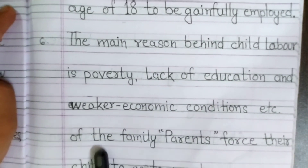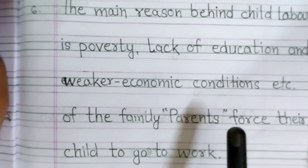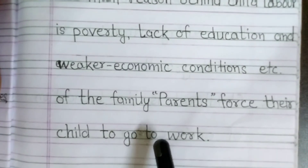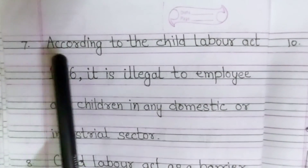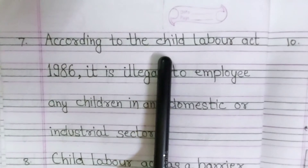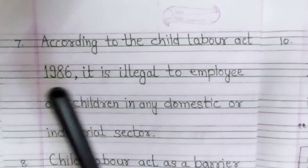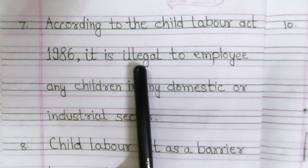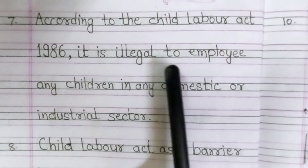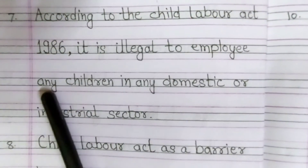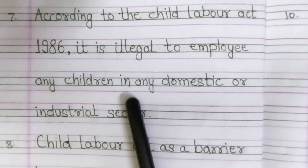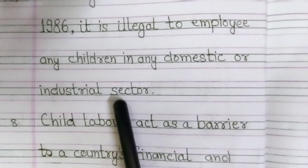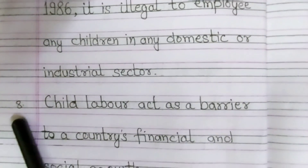Due to the family's conditions, parents force their child to go to work. Number 7. According to the Child Labor Act of 1986, it is illegal to employ any children in any domestic or industrial sector.